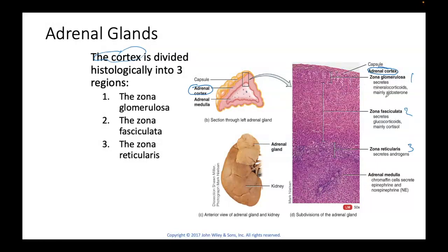The main mineralocorticoid is called aldosterone, and the mineral it's involved in regulating is sodium. Going deeper, the zona fasciculata secretes glucocorticoids — that's cortisone, cortisol, corticosterone. Moving a little bit deeper to number three, the zona reticularis, that's the androgens, like testosterone.